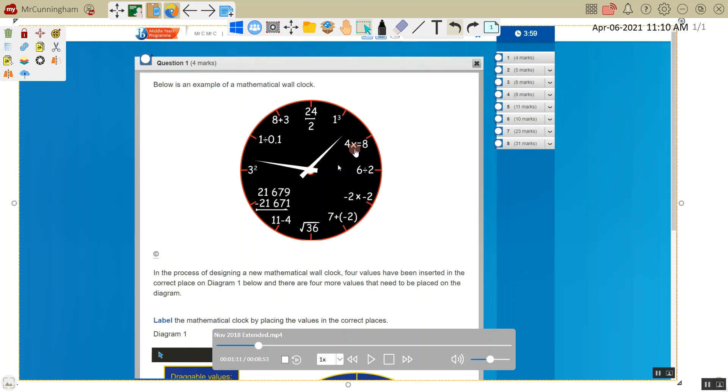We've got an example of a mathematical wall clock and each of these little expressions represents the number. So 1 cubed is 1, 4 times 2 is 8, 6 divided by 2 is 3. So this represents the numbers of the clock. Square root of 36 is 6. And in the process of designing a new mathematical clock, four values have been inserted in the correct place on diagram 1. So we have to label the mathematical clock by placing the values in the correct places.